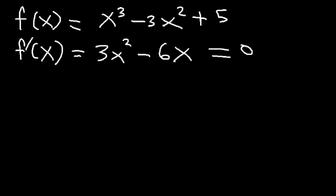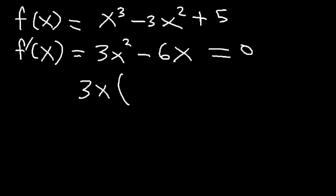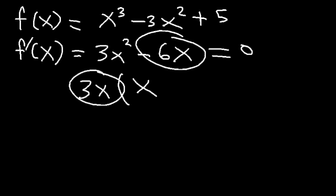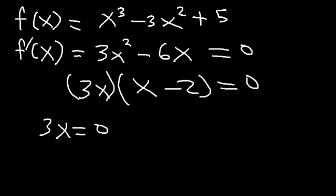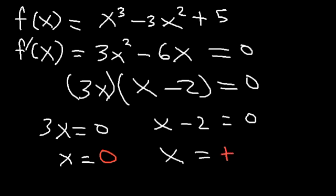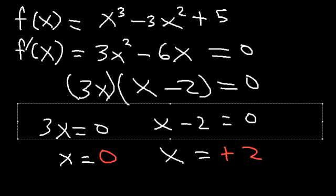Once you have the first derivative, set it equal to zero and solve for x. Remove the GCF, which is 3x: 3x² ÷ 3x = x, and -6x ÷ 3x = -2. So we have 3x(x - 2) = 0. Setting 3x = 0 and x - 2 = 0 gives two critical numbers: x = 0 and x = 2.